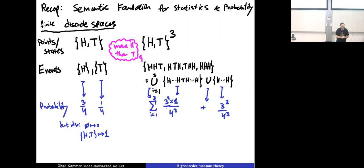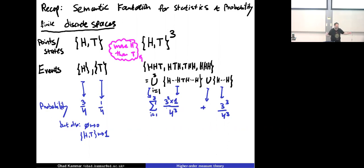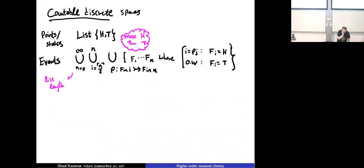As the spaces get more complicated — for example, flipping the coin three times — we get more complicated events, like 'more heads than tails.' We start talking about subsets of points in the space, where each point is the outcome of every three flips, and the events are subsets of those. We assign a number to each point, and to calculate the probability of an event we just sum up those points.